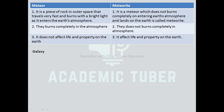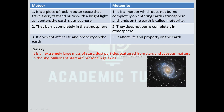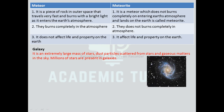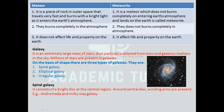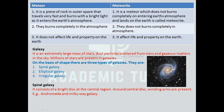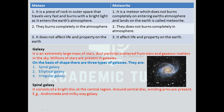Galaxy: it is an extremely large mass of stars, scattered dust particles, and gaseous matter in the sky. Millions of stars are present in galaxies. On the basis of shape, there are three types of galaxy: spiral galaxy, elliptical galaxy, and irregular galaxy. Spiral galaxy consists of a bright disc of stars at the center region. It is seen as a rotating spindle with winding arms all around its center. About 70% of galaxies are spiral. A great amount of dust particles and gaseous clouds are seen in the galaxy. Examples of spiral galaxies: Andromeda, which is the nearest galaxy to our Milky Way, and the Milky Way itself.